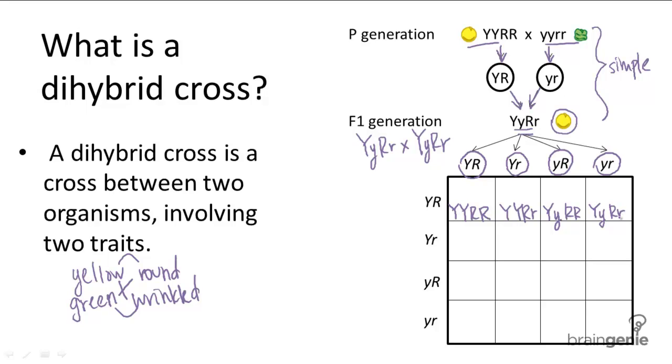So you kind of get the process: this is where the Y is coming from, this is where the second Y comes from, this is where the first R comes from, second R comes from. Same deal.